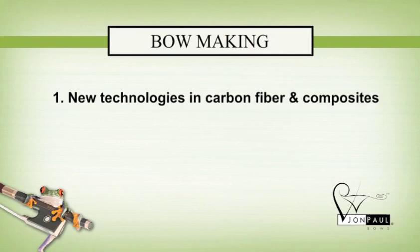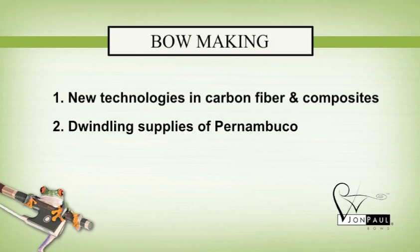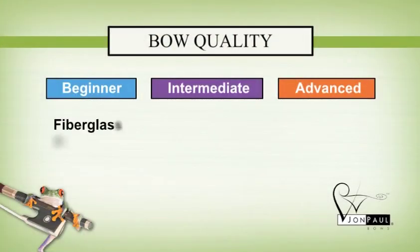Within the last 20 years, there have been two forces that have added options to the materials used in bow making. One, technologies in carbon fiber and composites have opened up new avenues to explore. And two, supplies of good Pernambuco wood have dwindled. For the most part, these materials are graded as follows.